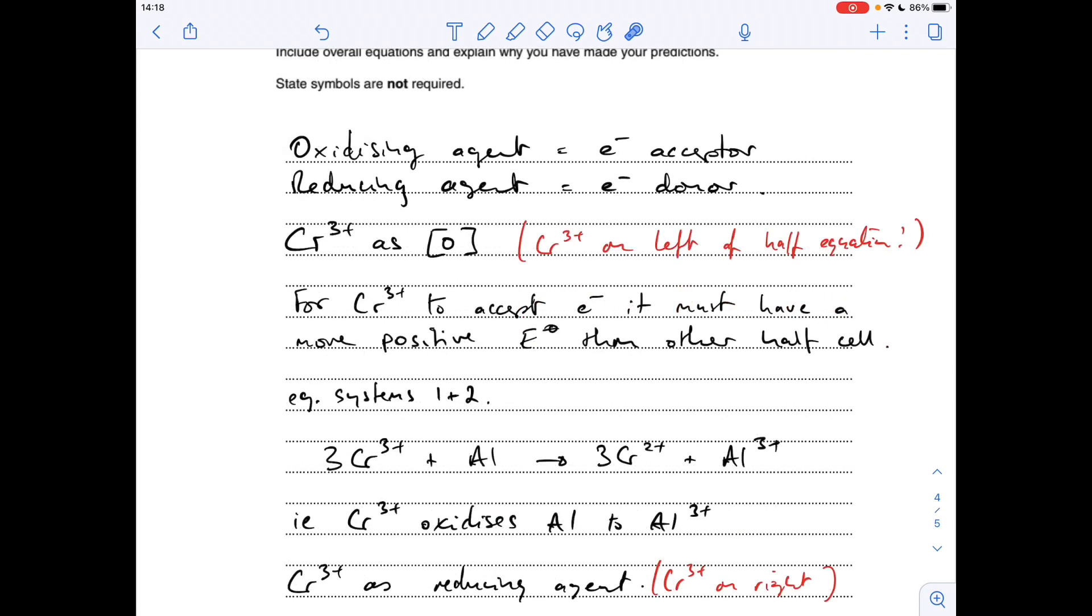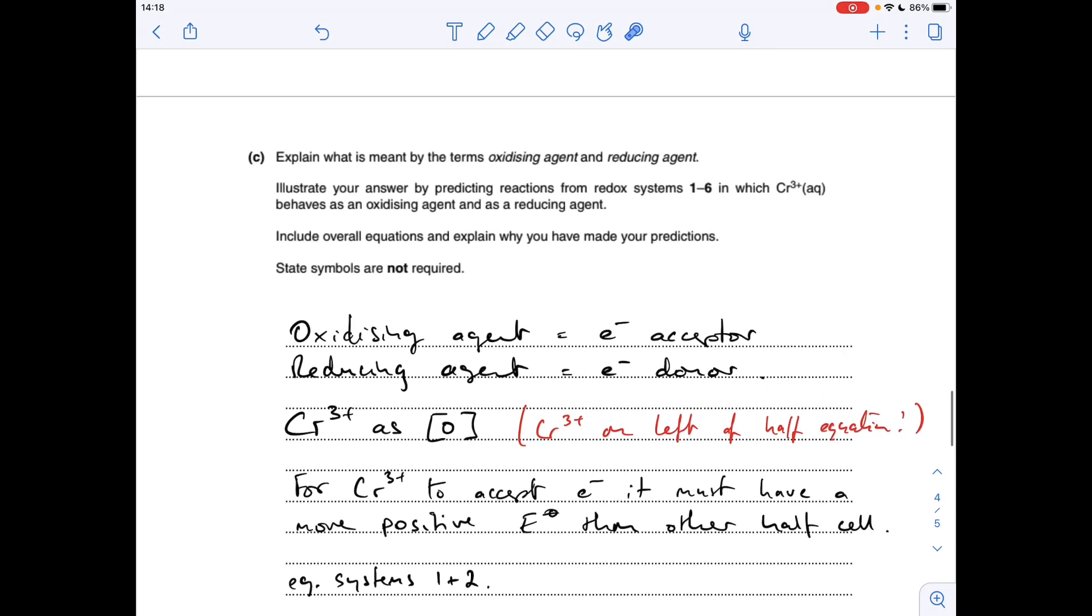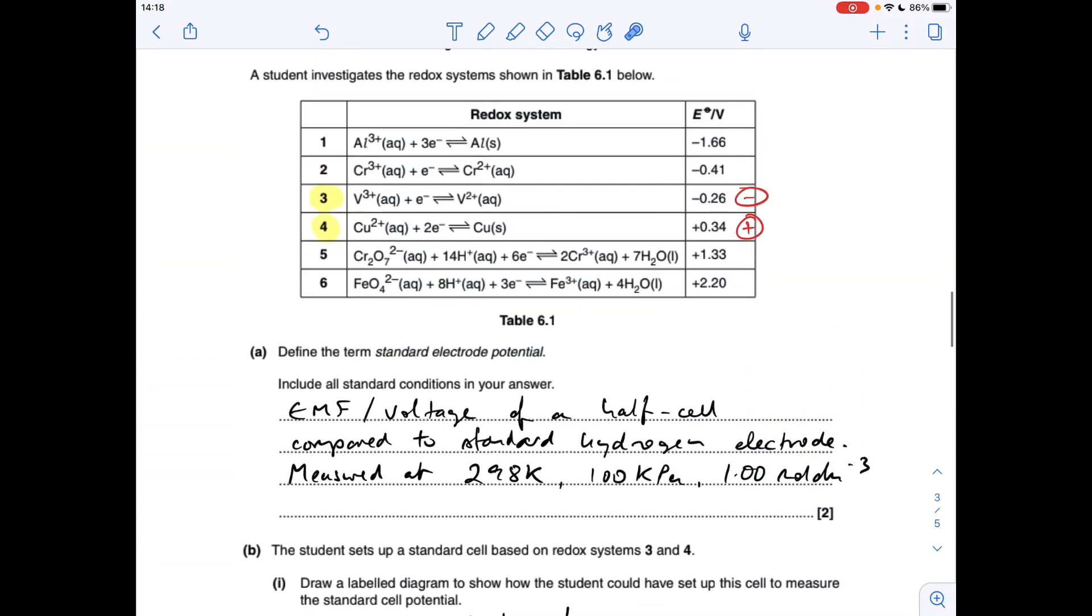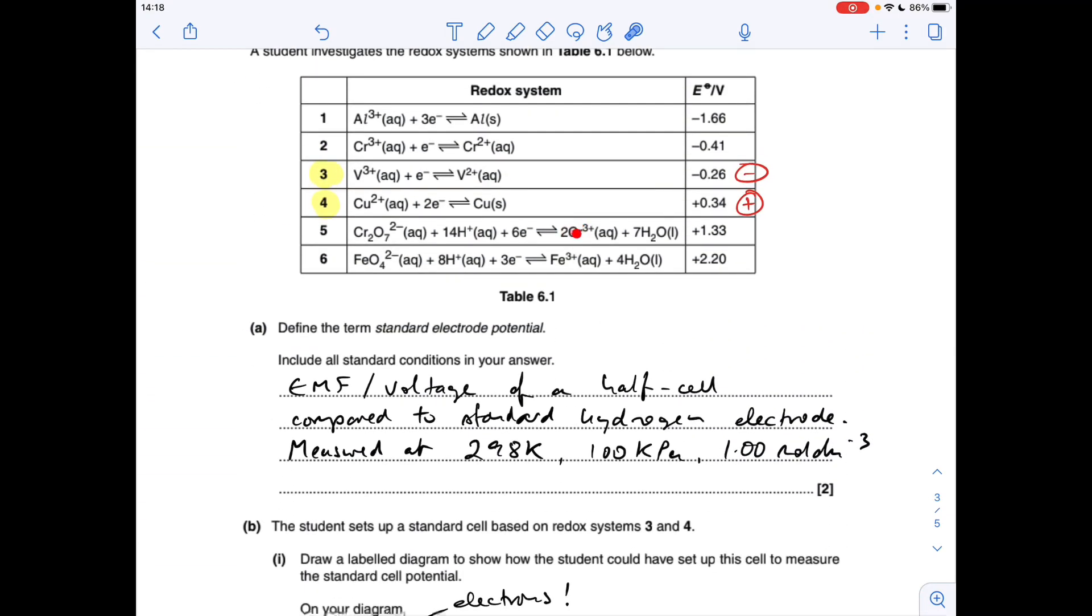For Cr3+ acting as a reducing agent, the reducing agent is the electron donor. So the Cr3+ now needs to be on the right. That's got quite a highly positive electrode potential already, so this needs to be less positive than the thing it's reacting with. The only one system it can be is that one. That's +2.2 volts, which is more positive. In other words, Cr3+ will donate electrons to the FeO4 2- H+ combination.